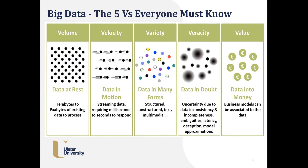If you see here, there is loads of volume, velocity, variety, veracity, and value to it. There are data which exist in loads of different servers which you can have access to, which were not previously accessed. Then there are data streaming in process, like live videos, audios, and other things. And there are different forms of data.